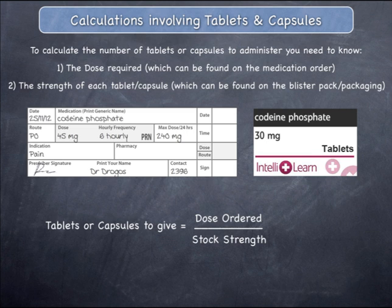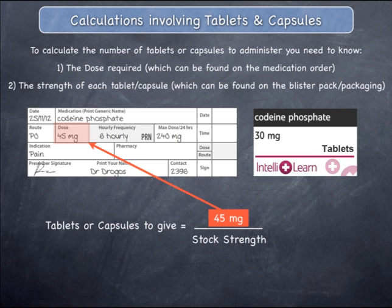Let's now replace each of these quantities with their actual values by reading the medication order and the strength of the medication. The dose that has been ordered can be read directly from the medication order, from the field called Dose, which specifies how much active medication the patient must be given in each dose. In this case it is 45 milligrams. The stock strength can be found on the packaging of the medication, or preferably on the blister pack itself. In this case it is 30 milligrams.